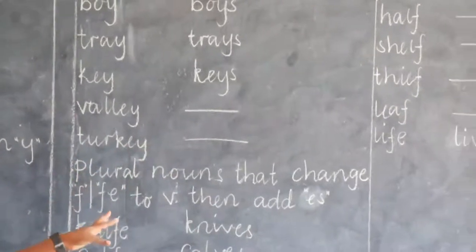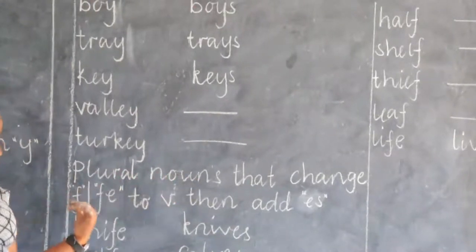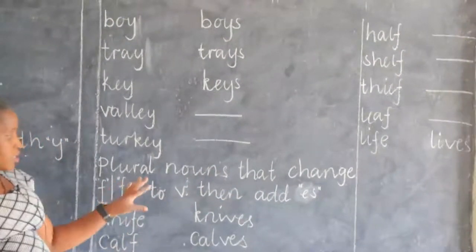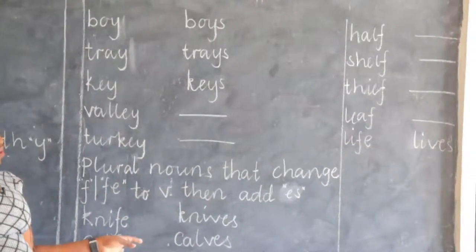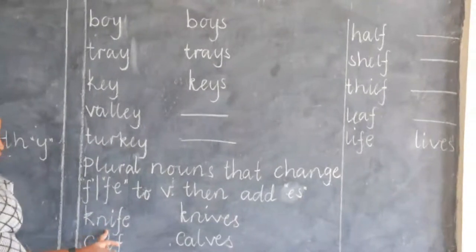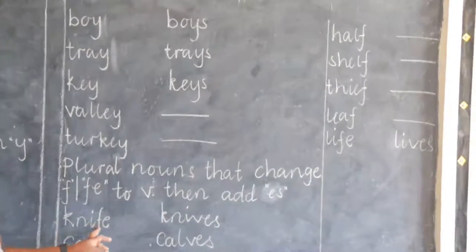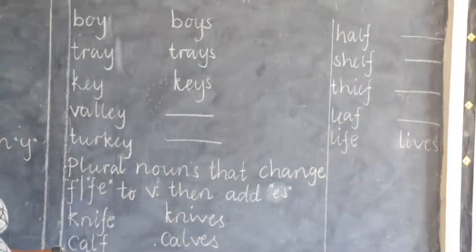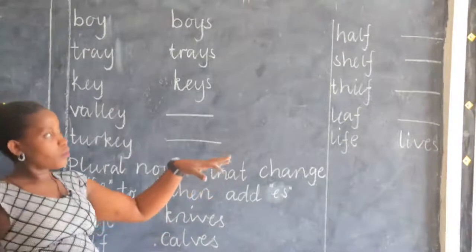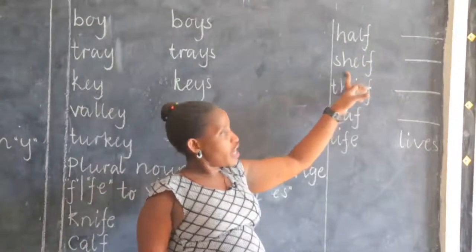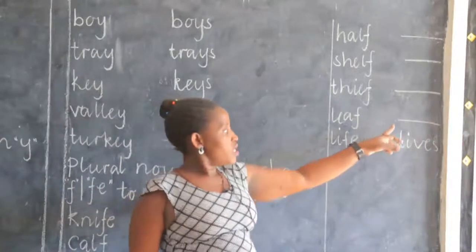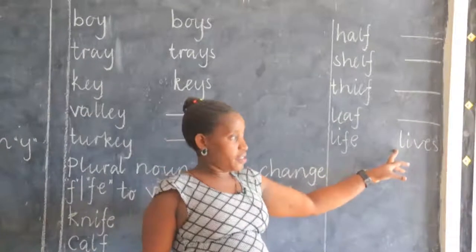Another category is plural nouns that change F or FE to V, then add ES. These nouns are also very many, but we shall mention a few. For example, knife ends with FE, so we change FE to V and add ES — we say knives. Calf — a young one of a cow or an elephant — goes to calves. Shelf goes to shelves. Thief goes to thieves. Life goes to lives. We can continue with more.